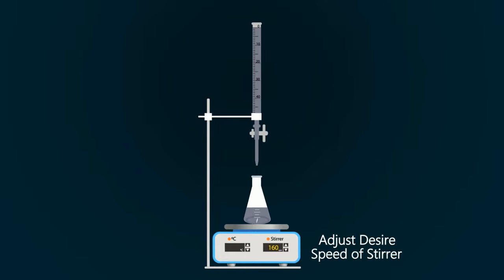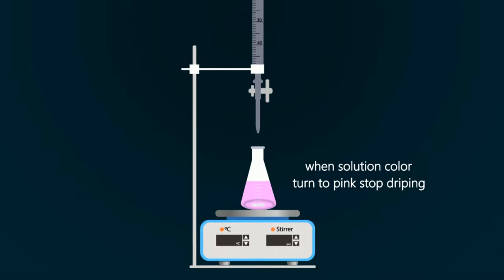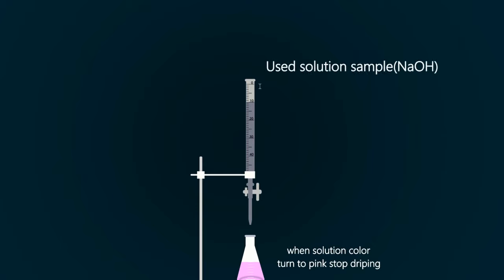Now start adding NaOH solution dropwise. You have to stop the burette when the color starts turning into pink. Stop the burette and note down the reading of NaOH used, which is 10 milliliters.